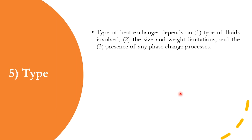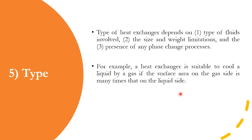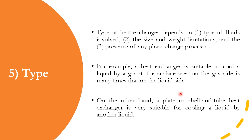Number five is the type of heat exchanger, which is dictated by three main factors: the type of fluids involved (whether corrosive, viscous, liquid, or gas); size and weight limitations; and the presence of any phase change process — because in phase change, an additional parameter h_fg (enthalpy or latent heat of vaporization) must be included. For example, a finned-surface heat exchanger is suitable to cool a liquid by a gas if the surface area on the gas side is many times that of the liquid side. A plate or shell-and-tube heat exchanger is very suitable for liquid-to-liquid cooling.